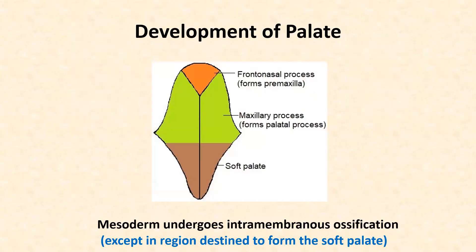The palate is formed by the union of three components. The frontonasal process, which forms the premaxilla, unites with the right and left palatal processes. When these three components unite, it leads to formation of the palate. The frontonasal process forms the primitive palate or premaxilla and bears the incisal teeth.